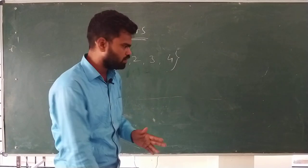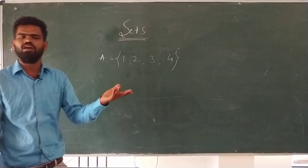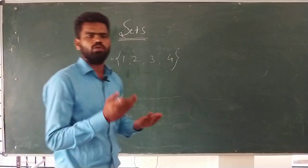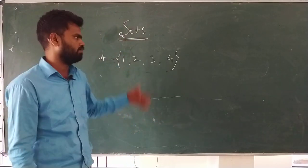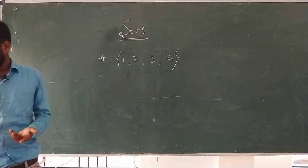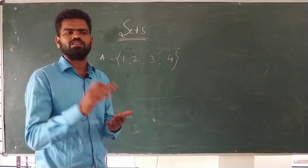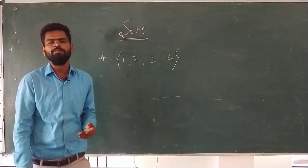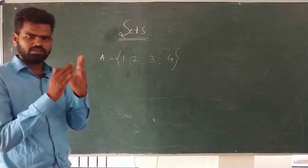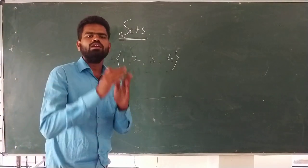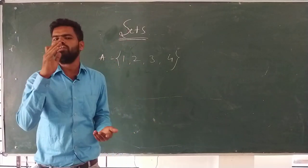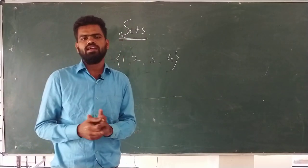Sets can be represented by two ways: first, the tabular method, and second, the set builder method. Moving on to some definitions of sets — the first definition is the empty set. An empty set is a set that does not have any element. If a set has no element inside it, it is called an empty set.